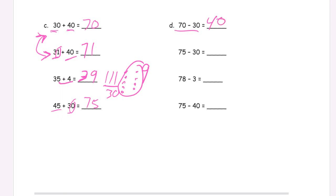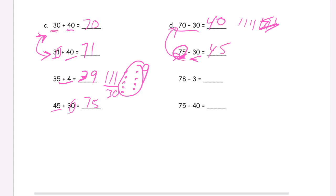You could draw the quick tens: one, two, three, four, five, six, seven. Then cross out these three and count the tens left: 10, 20, 30, 40. 75 minus 30 — you notice this is almost the same problem except you start with five more. You start with five more, but you're still subtracting the same amount. So if you start with five more, you should end up with five more. 45. And that's the mental trick for that one.